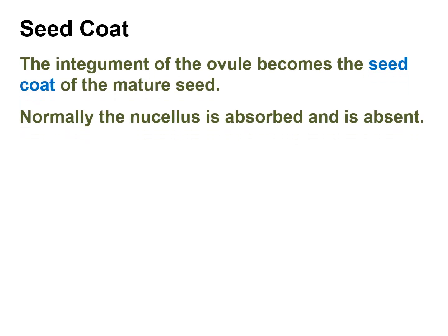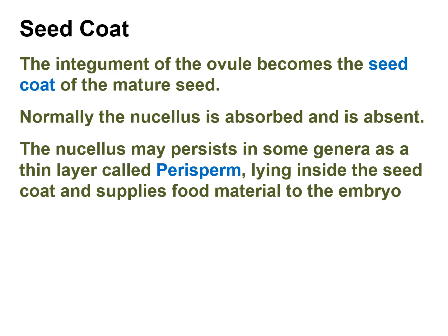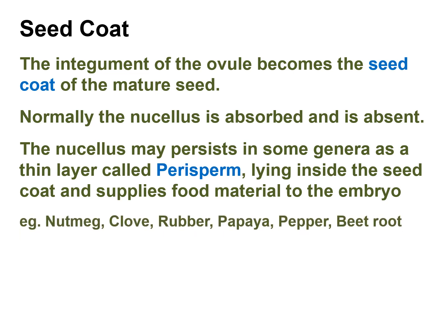Seed Coat: The integument of the ovule becomes the seed coat of the mature seed. Normally, the nucellus is absorbed and is absent. However, the nucellus may persist in some genera as a thin layer called perisperm, lying inside the seed coat and supplying food materials to the embryo. Examples of seeds with perisperm include nutmeg, clove, rubber, papaya, pepper, and beetroot.